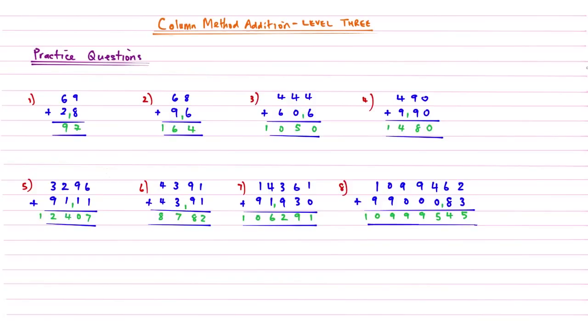Okay, welcome back. Here are your quick answers for the practice questions. Answer to question 1 is 97. Answer to question 2 is 164. Number 3 is 1,050. Number 4 is 1,480. Number 5 is 12,407. Number 6 is 8,782. Number 7 is 106,291. And question 8 is 10,999,545.